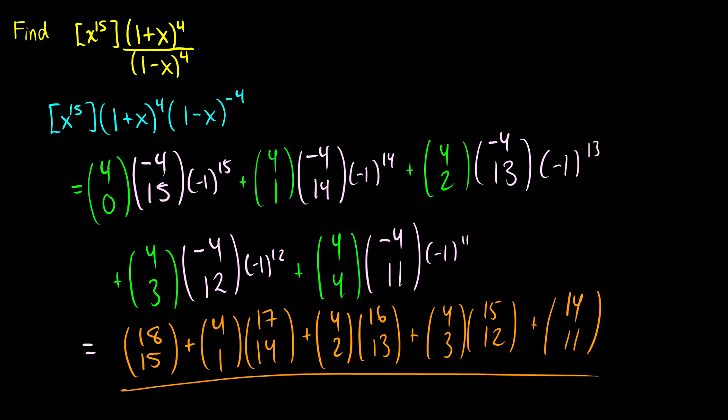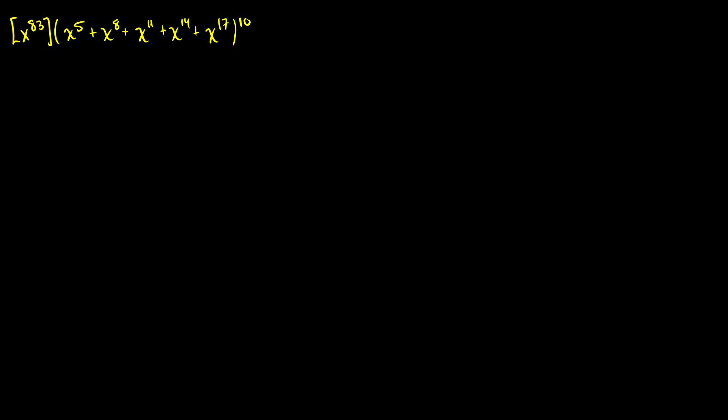This is your first step into more advanced coefficient extraction questions. It's nice because we have (1 + x) on top, so we don't have to worry about positives and negatives. In this next question, however, we will. I want to find the coefficient of x^83 in (x^5 + x^8 + x^11 + ... + x^17)^10.